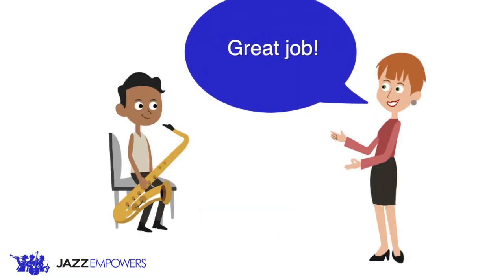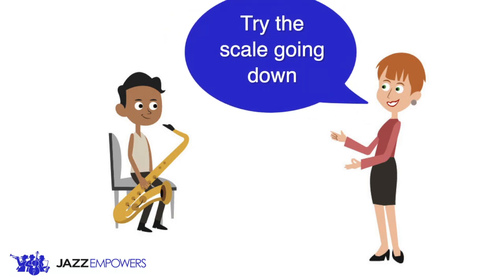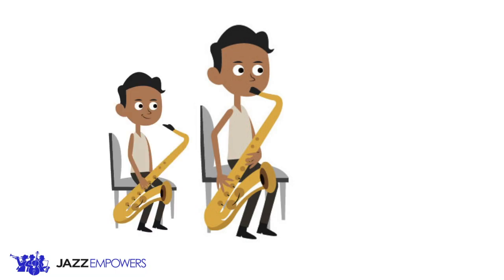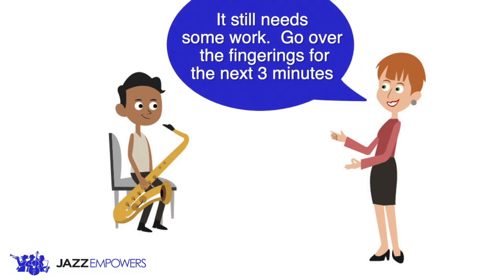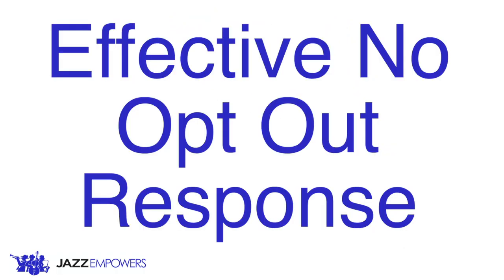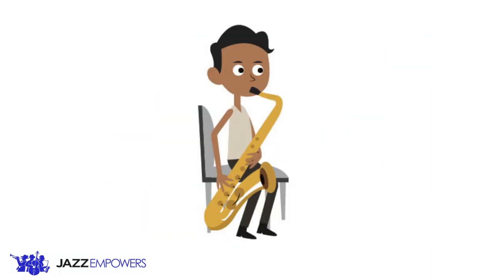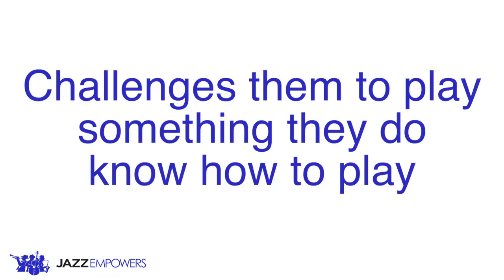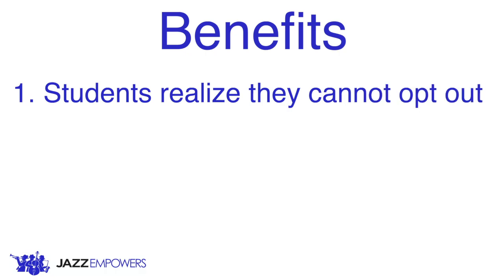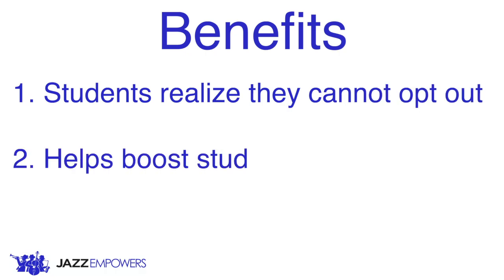Great job! Now for going down the scale, you do the same thing in reverse order. Try going down now. Okay, thanks for trying to play it going down. It still needs some work, so spend the next three minutes going over the fingers while I work with the trombones. This is an effective no-opt-out response, because even though the student doesn't know how to play the scale up and down, it challenges him to play the part of the scale he already knows. As a result, it not only helps the student understand you won't give up on them the easy way out by saying I can't play it, but also helps boost their confidence and gets them closer to playing it correctly.